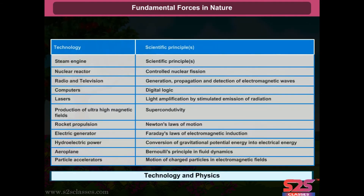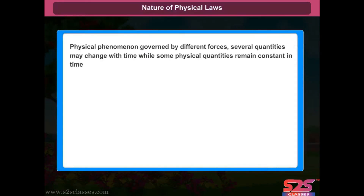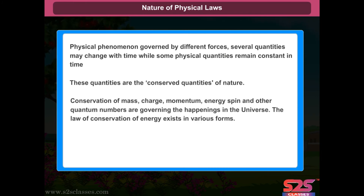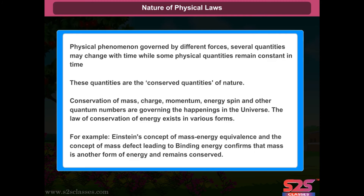Look at the table of various technologies and physics. Nature of physical laws. Physical phenomena governed by different forces. Several quantities may change with time, while some physical quantities remain constant in time. These quantities are the conserved quantities of nature. Conservation of mass, charge, momentum, energy, spin and other quantum numbers are governing the happenings in the universe. The law of conservation of energy exists in various forms. For example, Einstein's concept of mass-energy equivalence and the concept of mass-defect leading to binding energy confirms that mass is another form of energy and remains conserved.